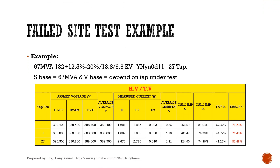I have brought for you an example of a site failed test. Power transformer 67 MVA, 132 with ±12.5% and ±20% over 13.8 over 6.6 kV, with vector group YNYN0D11, and 27 taps. Power base is 67 MVA and voltage base depends on the tap under test. The failed test was between the high voltage winding and the tertiary winding — errors were more than the limit. The test was confirmed by winding DC resistance. The manufacturer drained the oil, and the delta was found open at the Y3 bushing inside the transformer.